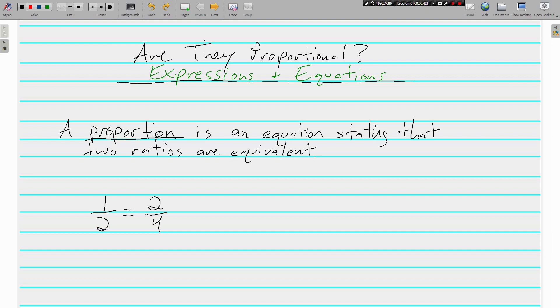Something that is not proportional would be like one-third being equivalent to nine-tenths. We know that these do not represent the same amount. So this is not proportional. But this one on the left is. It's an equation with an equal sign stating that two ratios are equivalent.